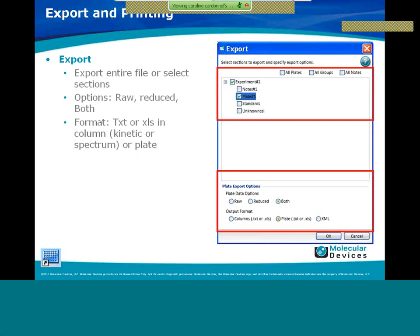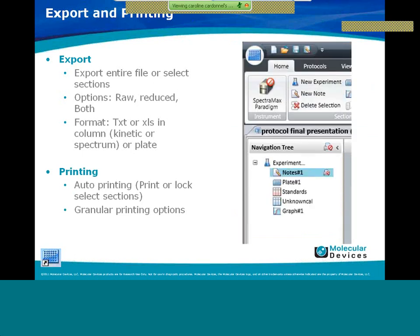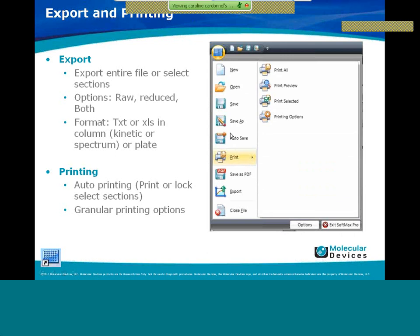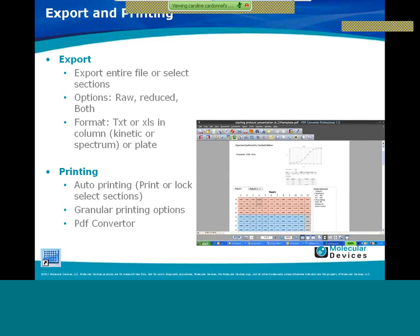The export in SoftMax Pro 6 is very granular — you can export an entire file or a selected section, choosing raw data, reduced, or both, in TXT or XLS format as a column or plate format. The column format is generally advised for kinetic and spectrum data. For printing, you can select a printer icon next to sections in the navigation tree to exclude them from printing — providing a very granular printing option. A PDF converter also allows you to save a PDF version of your protocol.